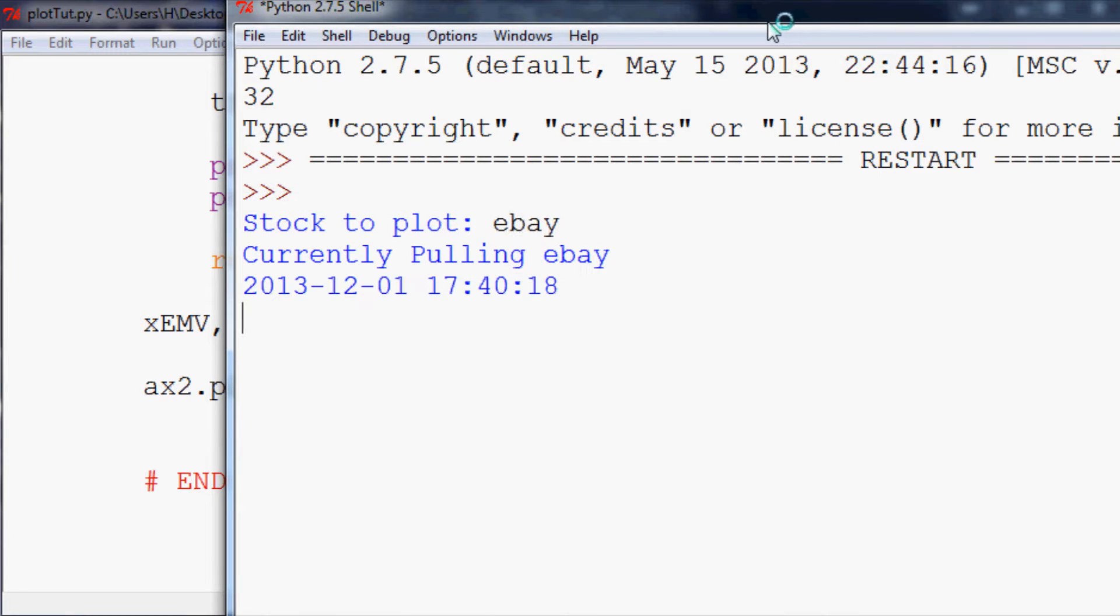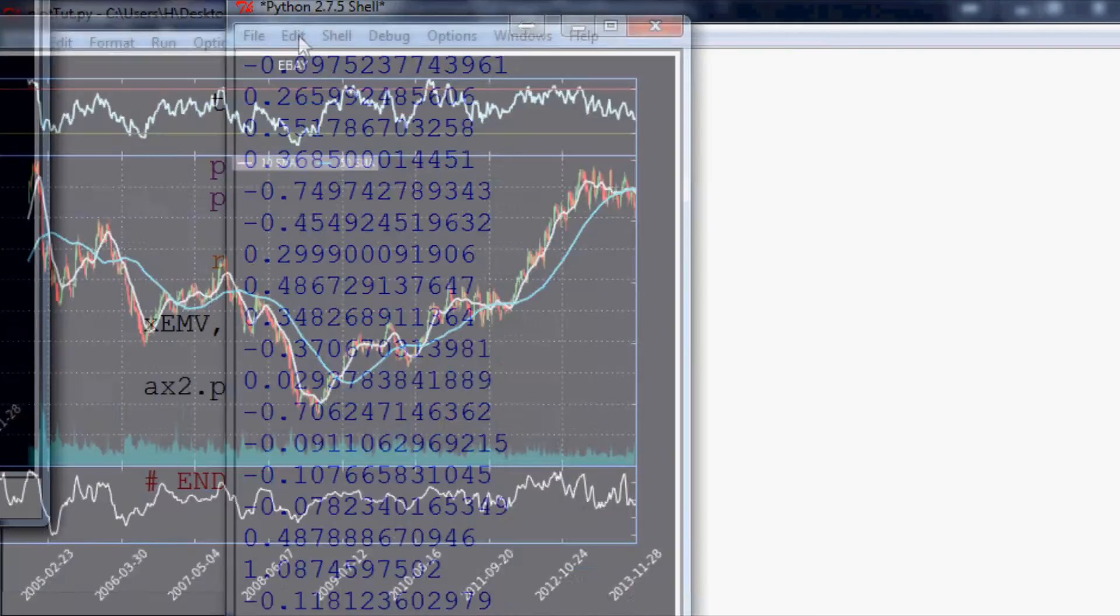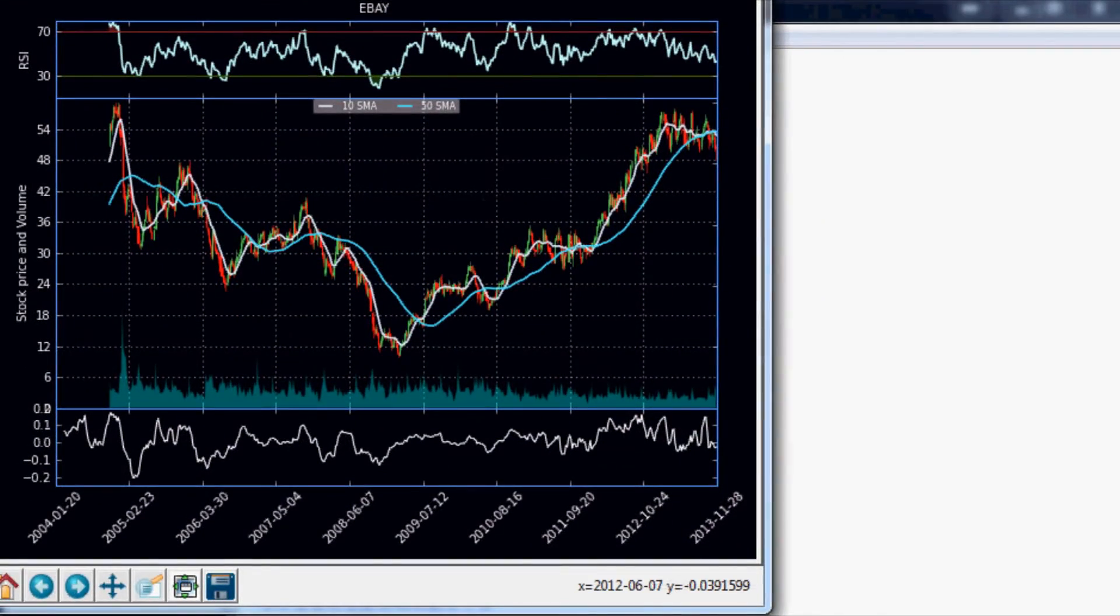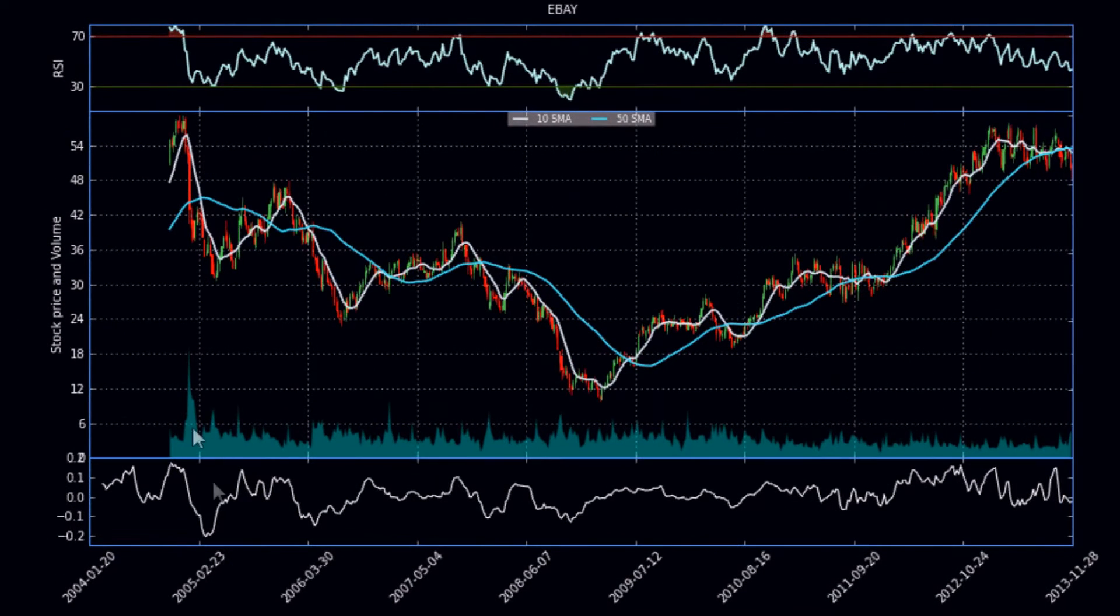So we'll plot up eBay. Here's the first thing that we get. It looks like it's working - as it's falling, the Ease of Movement goes down. It looks just like the one I showed you in the first introductory video.